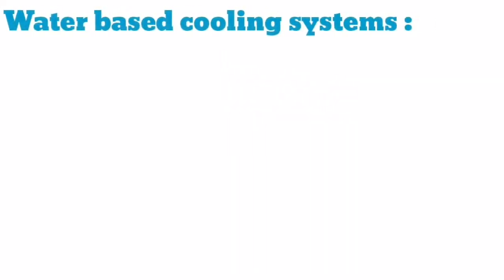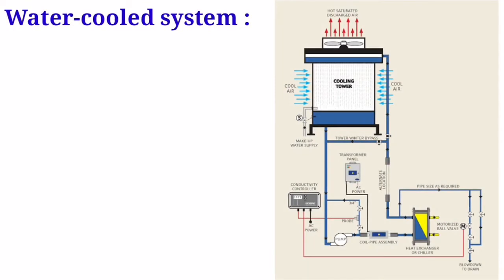Three types of HVAC systems utilize water in the cooling process. The first type is water-cooled systems. These systems reject heat from the refrigerant to water in a water-cooled condenser. Typically water enters the condenser at 80°F and leaves at 90°F. The water then goes to a cooling tower where a portion evaporates, and the remaining water with makeup water is circulated back to the condensers. Where water is scarce, dry coolers are used instead of cooling towers to prevent water loss.